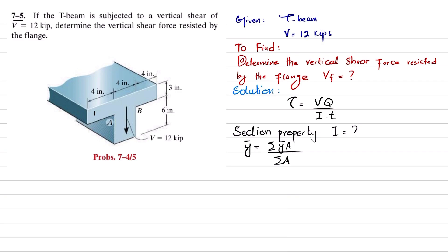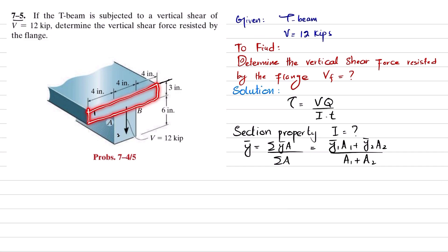For that we use the formula: Y-bar equals the sum of Y-bar times A divided by the sum of area. The beam is composed of two parts: the flange is the first member and the web is the second. Taking the upper surface as a reference line, A1 is 12 multiplied by 3, where 12 is the width and 3 is the height of the flange.